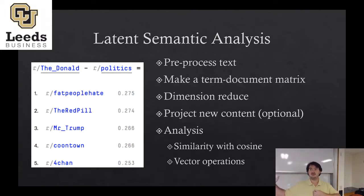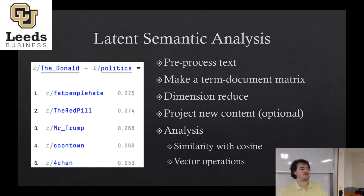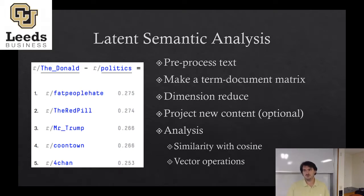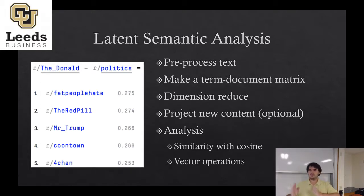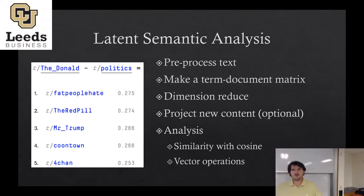I talked a little about latent semantic analysis (LSA) and dimension reduction in our recommender systems class. Here's how LSA actually works: you start by pre-processing your text — remove punctuation, segment into paragraphs, make it all lowercase, maybe remove stop words like 'a,' 'the,' 'and,' 'of.' Then you make the term-document matrix: how many times does each word appear in each document? You dimension-reduce it, giving you a smaller representation. You can project new content into it, calculate similarity between documents, or perform other vector operations.